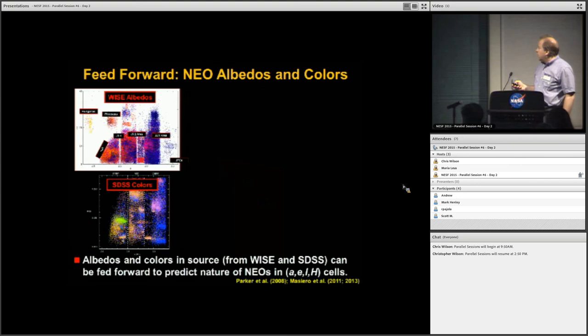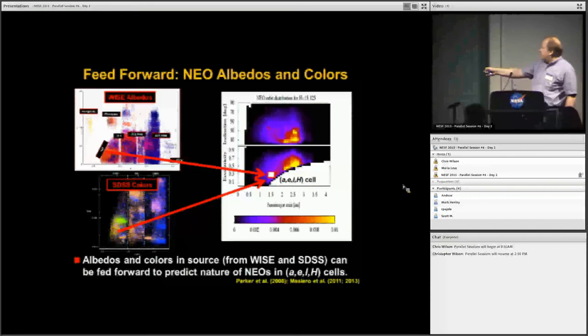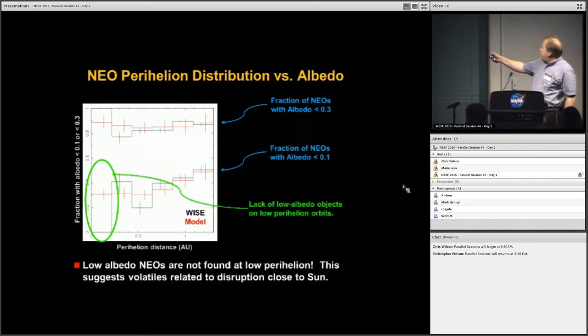To check this, we took the information we have from WISE albedos. We also have Sloan Digital Sky Survey colors. We propagated them through our model. Ultimately we're using these data to predict what the albedo distribution is for our near-Earth objects. These are our NEOs that have albedos less than about 30%. You can see the difference between model and data is pretty good. But you go down to NEOs that have an albedo less than 10%. The model is really good until this last bin. And all of a sudden we're predicting a bunch of objects but yet observed it crashes through the floor. So we are missing low albedo asteroids close to the sun.